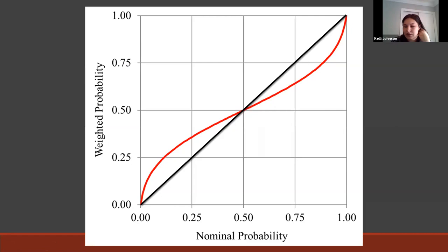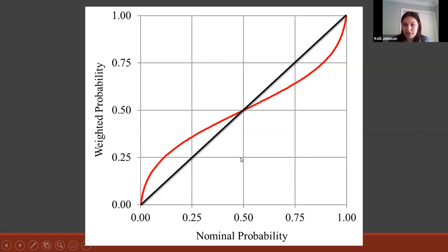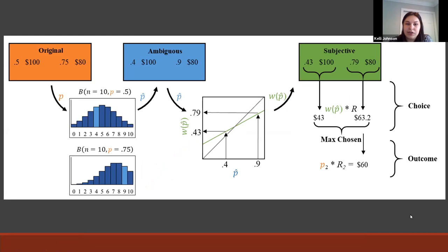We wanted to demonstrate using a model that distorting probabilities can actually be advantageous if your probability information is imperfect. In the literature, we give people probabilities, observe their decisions, and say they're not representing it correctly — 'I said 0.25 but they're acting like it's higher.' What we demonstrate here is that if probabilities are imprecise, it is actually advantageous to distort them — you're correcting for biases in how probabilities are estimated.